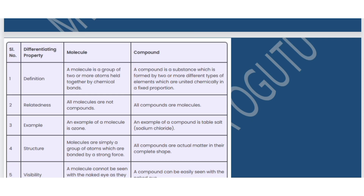From definition: a molecule is a group of two or more atoms held together by chemical bonds. A compound is a substance formed by two or more different types of elements united chemically in a fixed proportion. A compound is made up of elements, while a molecule is made up of atoms.